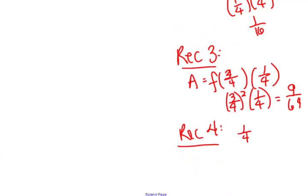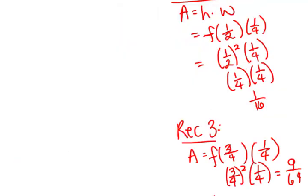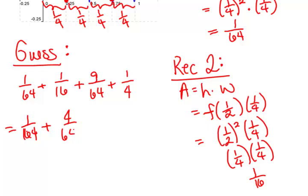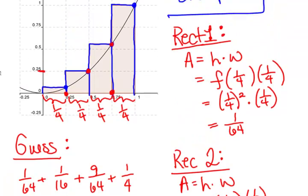So I got the area for each rectangle. If I want to use this to estimate the area under the curve, what should I do with them? Add them up. Okay. So my guess is going to be, so let's see, what did I say? One-sixty-fourths plus one-sixteenth plus nine-sixty-fourths plus one-fourth. So if we go to all sixty-fourths here, that's one-sixty-fourths plus four-sixty-fourths plus nine-sixty-fourths plus sixteen-sixty-fourths. So that's the guess we got using this method, thirty-sixty-fourths.